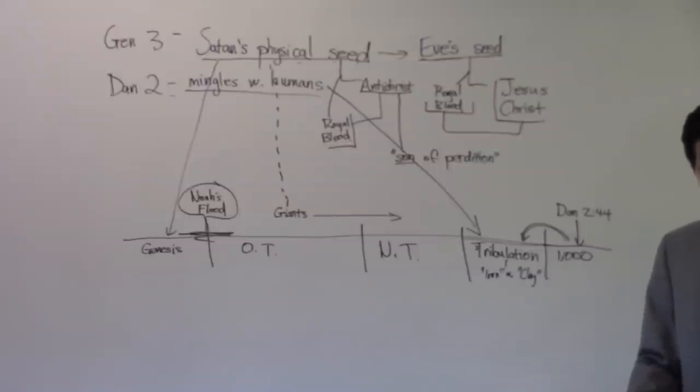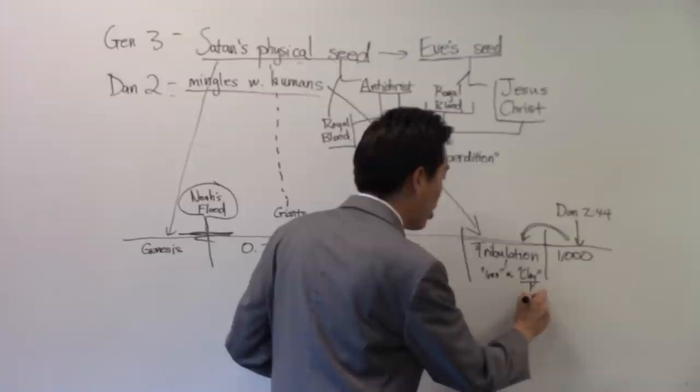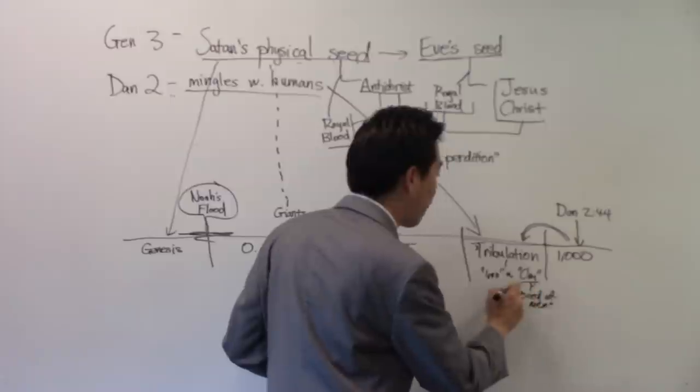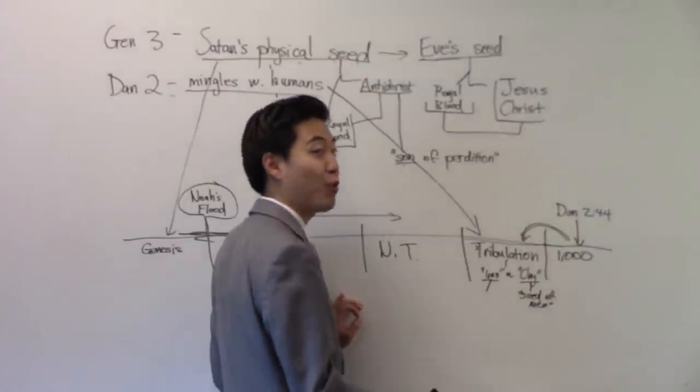Verse 42. And as the toes of the feet were part of iron and part of clay, there's a mingling. So the kingdom shall be partly strong and partly broken. Why? And whereas thou sawest iron mixed with miry clay, they, that's the iron, whoever they are, shall mingle themselves with who? The seed of men. There is your clay. We see right here that the clay is referring to seed of men, there's your humans. So we can't say that this iron here is referring to humans because the humans is already taken here. Who's this iron then? It's other beings.